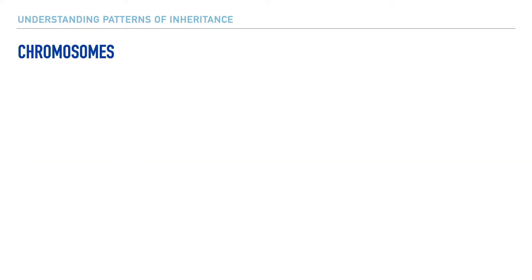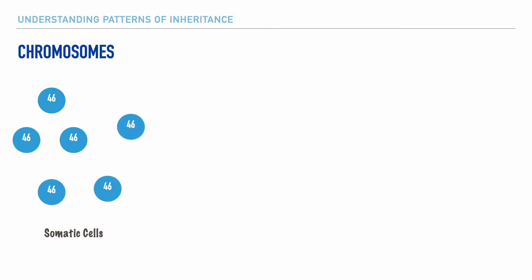If we were to look at each of our somatic cells, which is another term for our body cells, we'd find that within them there are a total of 46 chromosomes. These chromosomes are an exact copy of the 46 chromosomes that we had when we were a zygote, and these chromosomes are grouped into pairs — 23 pairs for a total of 46 chromosomes.